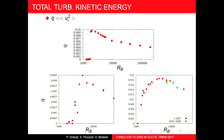There appear to be two distinct power laws as Reynolds number increases further, which we have not yet fully explained. For the pipe, there is also a sharp transition followed by a power law, though pipe simulations reach smaller Reynolds numbers than channel simulations because polar coordinate computations are more demanding.